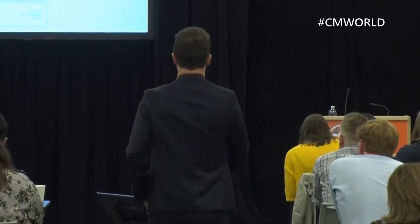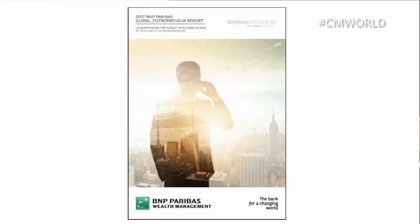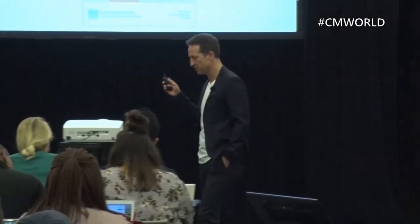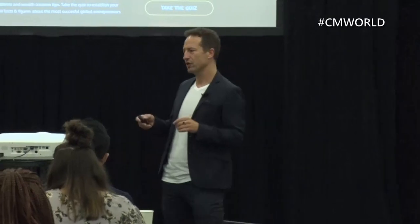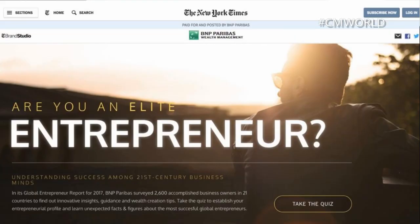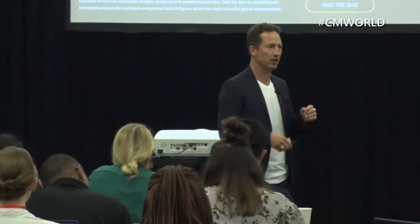The next case is from Paris-based bank BNP Paribas. They have a very awesome white paper — a big piece of research on elite entrepreneurs. It's a very good report and important for their audience-building efforts. The only problem was not too many people downloaded it. So they went to the New York Times and said, 'We want people to come to our site to get that.' The New York Times found that once people start reading the white paper, they read it to the end — but they just didn't have enough people in there.